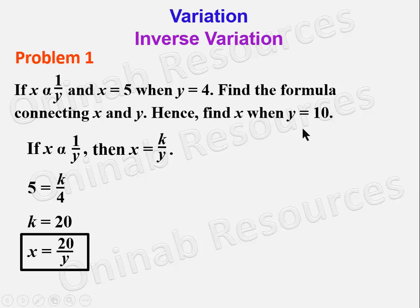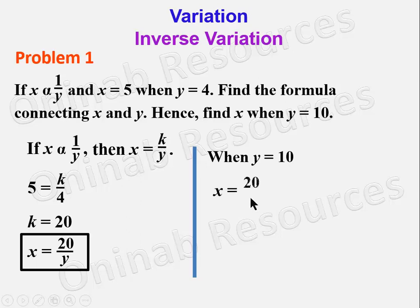To find x when y = 10, we substitute y = 10 into the formula: x = 20/10. Cancelling zeros leaves 2/1, which gives x = 2.